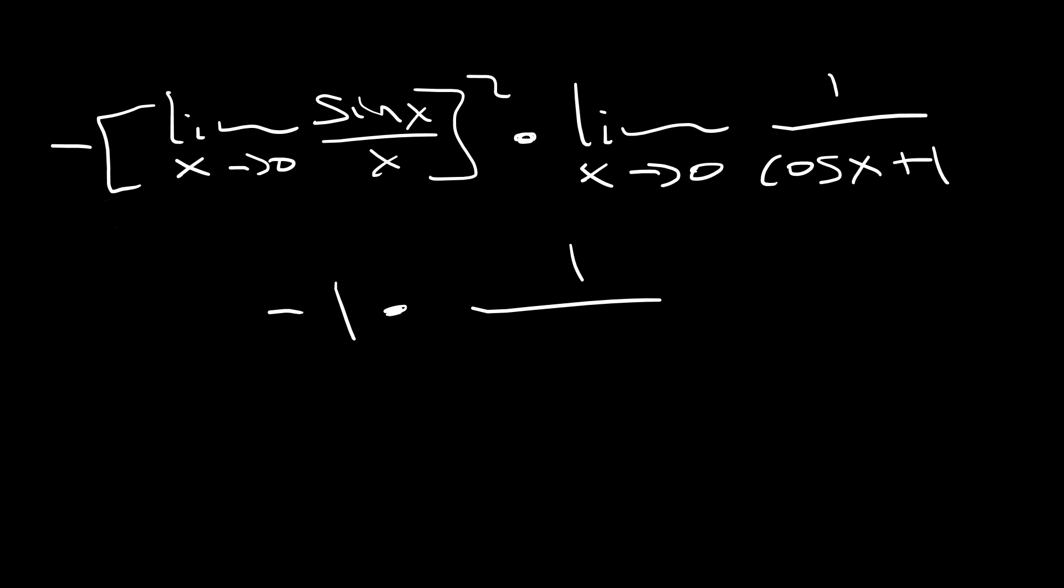The other limit you can do through direct substitution. This is going to be 1 over cosine 0 plus 1, you see? Which is then the following. Negative 1 times 1 over cosine 0 is 1 plus 1, which is then just negative 1 half. That's the value of the limit. Thank you so much for watching. I hope you've enjoyed it and you've learned something from it.